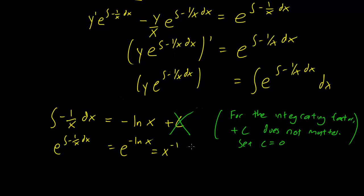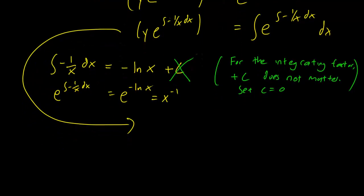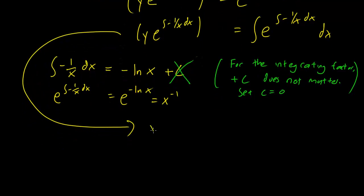So we need to take the exponential of this so that e to the minus 1 over x dx equals e to the minus log x, and this is just going to be x raised to the minus 1 power. So we have that value for the integrating factor. So let's just rewrite this equation now. So we have y x to the minus 1 equals integral of x to the minus 1 dx and the right hand side is simply going to be log x plus c.